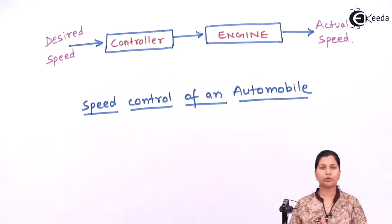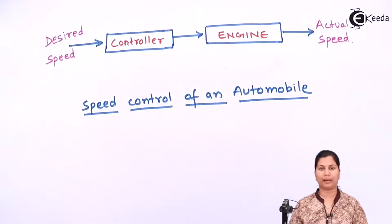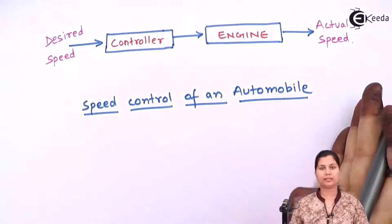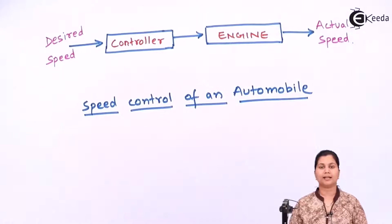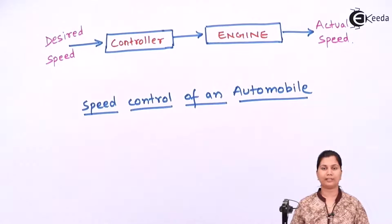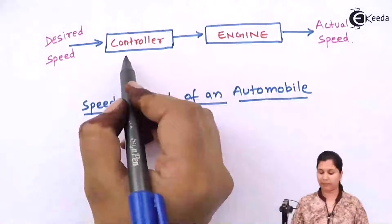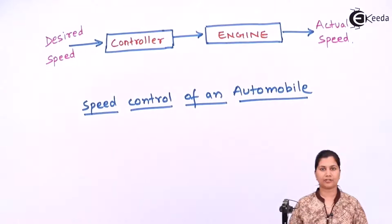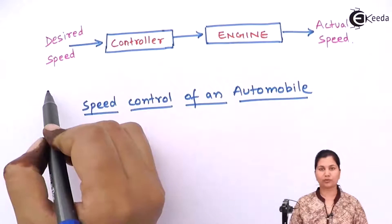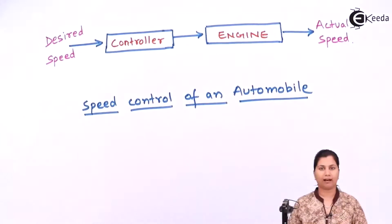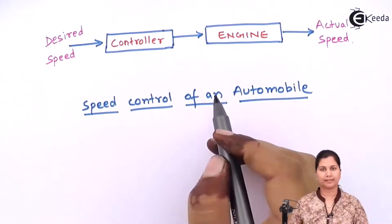In this open loop system there is no way in which the actual speed is controlled automatically. The actual speed may be far away from the desired speed. When the automobile is running on the road, the speed which we are getting may be different from the desired speed. There may be a controller attached which is working on the engine, but the speed which we want may not be what we get as output. So this is an open loop system.